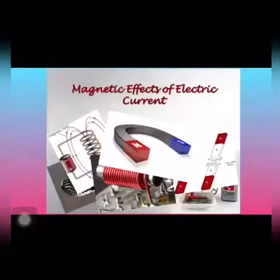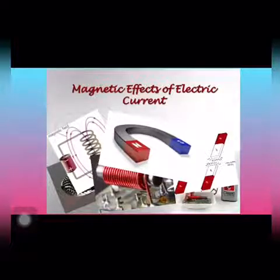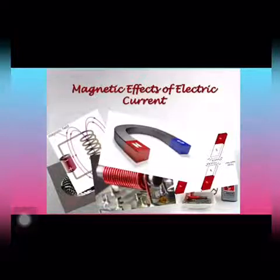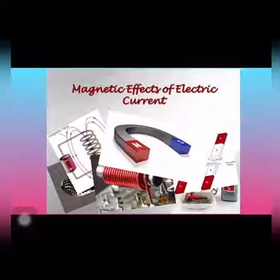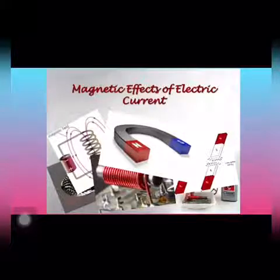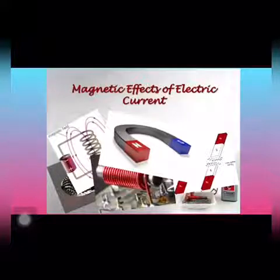Good morning students. Let us start with a new chapter of physics: magnetic effects of electric current. In the previous chapter on electricity, we studied that an electric current can produce a heating effect — Joule's law of heating. In this chapter, we will study that an electric current can also produce a magnetic effect. Whenever electric current flows inside a wire, it produces a magnetic field around it, and this relation between electricity and magnetism is called electromagnetism.